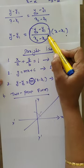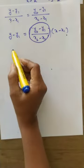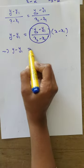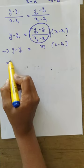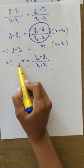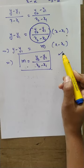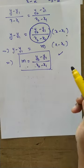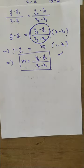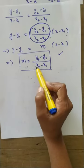In the slope point form, m can be represented as y2 minus y1 by x2 minus x1. This is the second formula to find slope of a given line. Use this formula when two points are given and the line passes through those two points. Slope can be found using the formula y2 minus y1 by x2 minus x1.